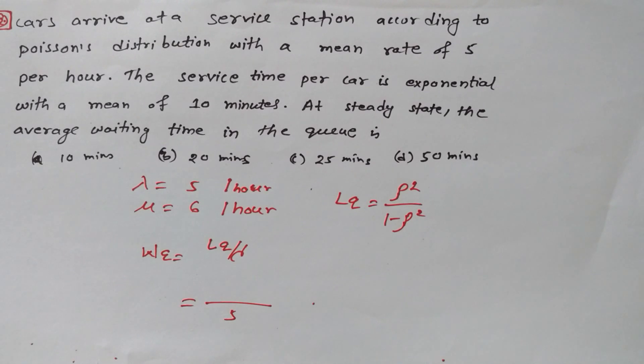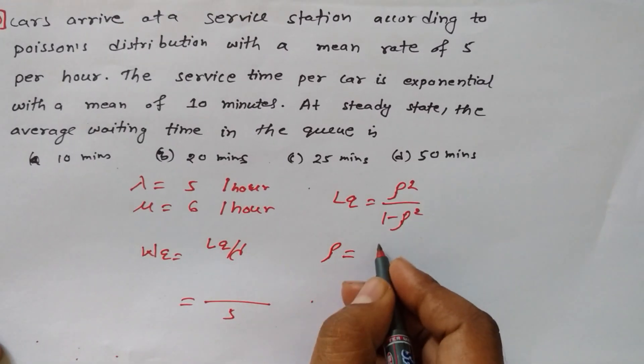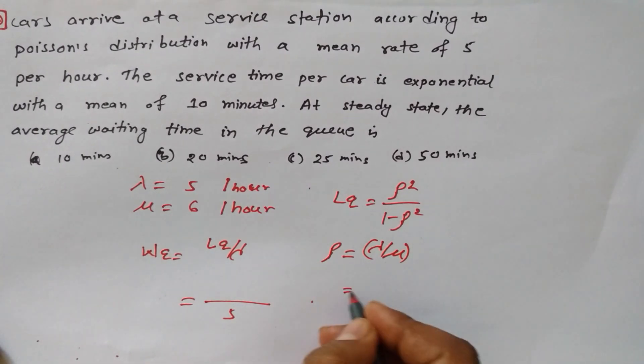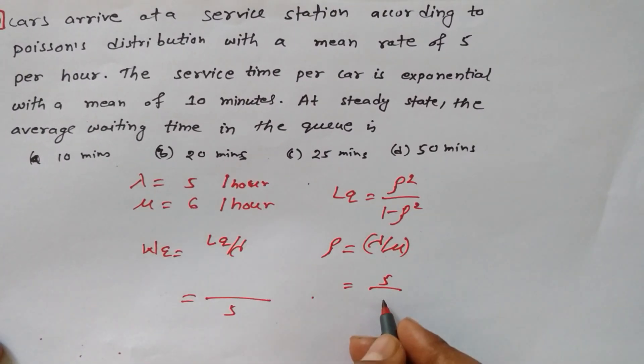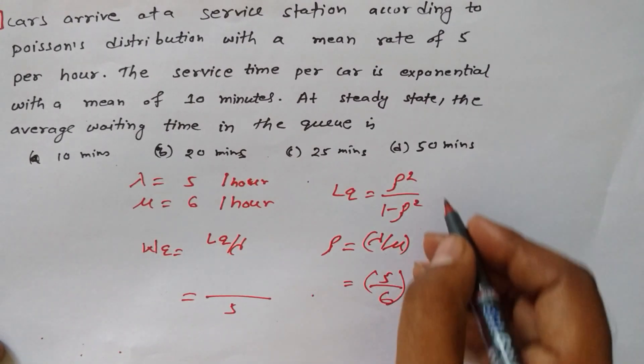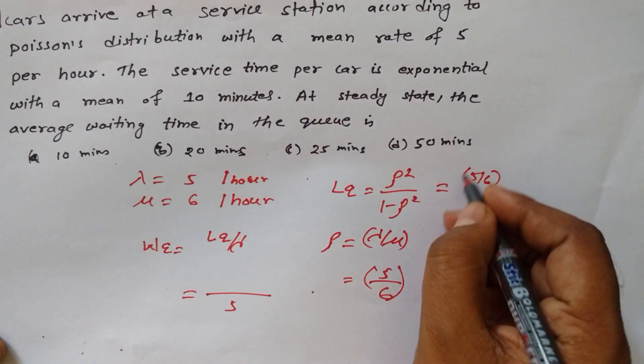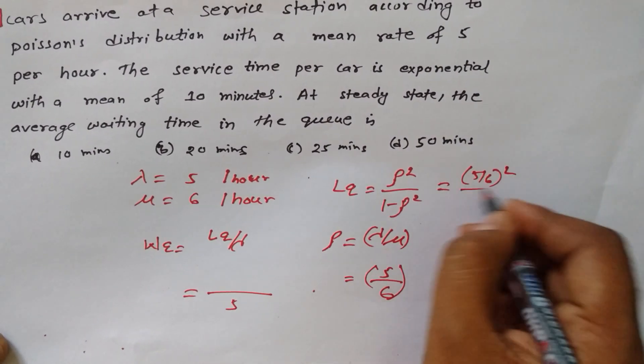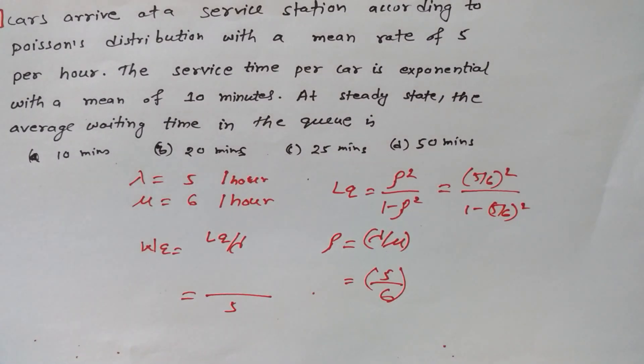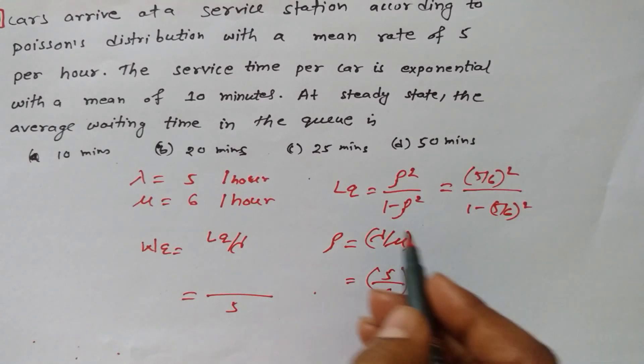Based on that we have to find out all these things. Let's find out utilization factor. Rho is equal to lambda by mu. Lambda is 5, mu is 6. So rho is 5 by 6. 5 by 6 whole squared divided by 1 minus 5 by 6.